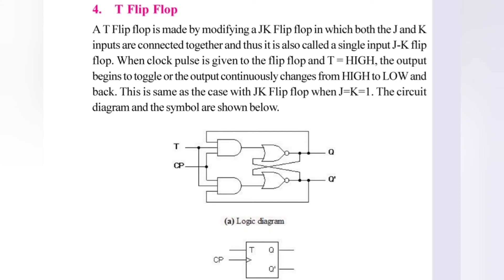In the circuit, we have 2 AND gates and 2 NOR gates. The J and K inputs are tied together as the single input T.